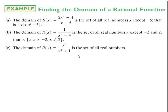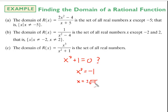For the third example, if we set the denominator equal to 0, we notice there's never any real-valued number where the denominator equals 0. For example, if I take x² + 1 = 0, I subtract 1 to get x² = -1, then square root both sides to get ±√(-1). The square root of a negative is an imaginary number, so there's no real-valued x for which we'd have division by 0. The domain is the set of all real numbers.